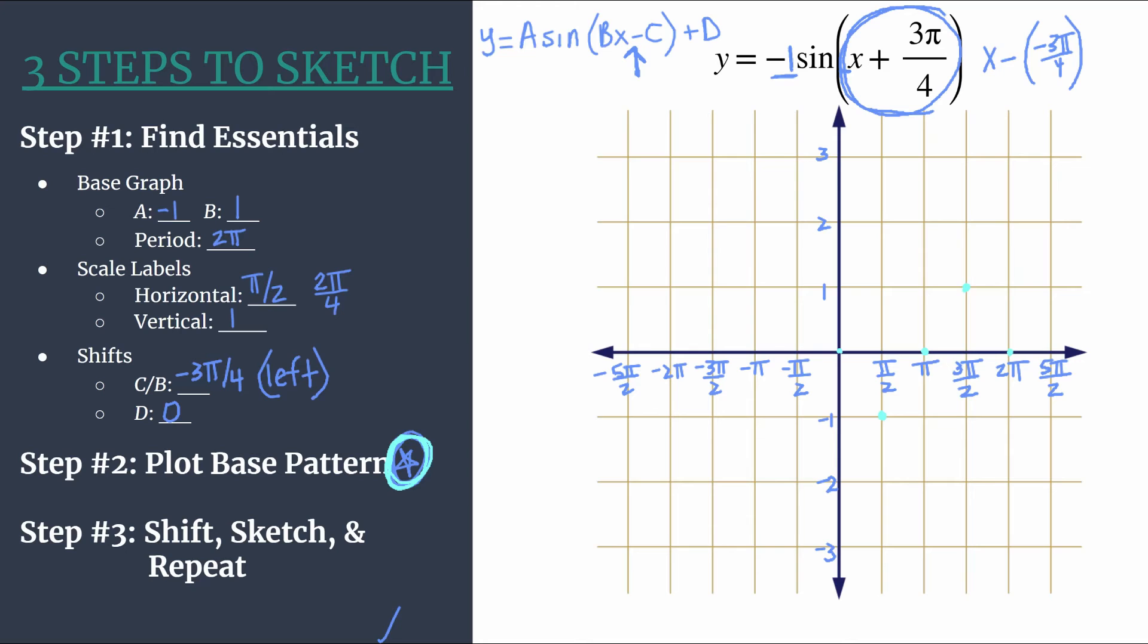Now we're ready for step three. I'm going to switch colors. This is going to be one cycle of our final shifted graph. In step three, we shift, sketch, and repeat. We know our shift is moving left 3π/4. π/4 we know is going to be right here - it's a half grid unit horizontally. So if we're moving 3π/4, that's one and a half grid units. Another thing that would be helpful is saying here's negative π/4, negative 2π/4, negative 3π/4. So if you want to label that negative 3π/4, you can. I'm going to keep it off just so we have a cleaner graph.